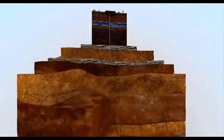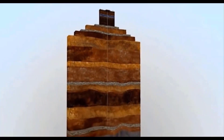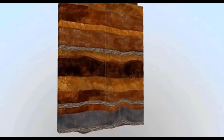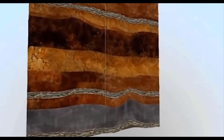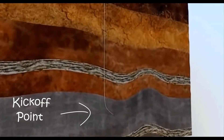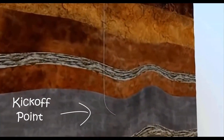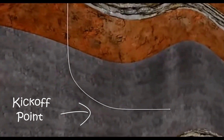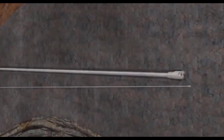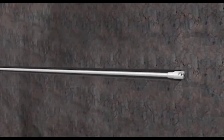Horizontal drilling is a unique method of drilling and necessary for shale formations. In these types of wells, vertical drilling continues until the kick-off point. At this point, the well starts to deviate to become horizontal. After the target depth is reached, a steel pipe called casing is lowered in the well and cemented.